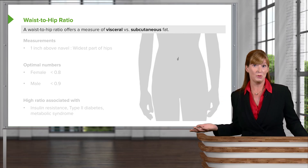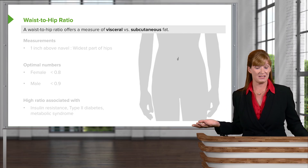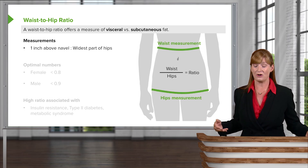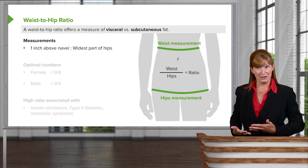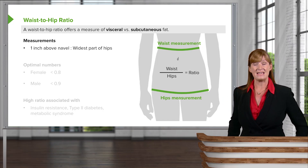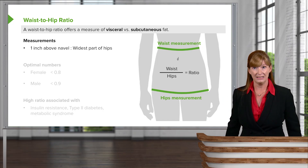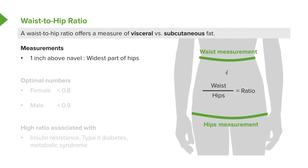How do we do a waist to hip ratio? The measurements are taken at one inch above the waist, at the narrowest point of the waist, and at the widest point of the hips. We take the waist measurement, divide it by the hips measurement, and there you have your ratio. Ideally, that ratio is one or less.